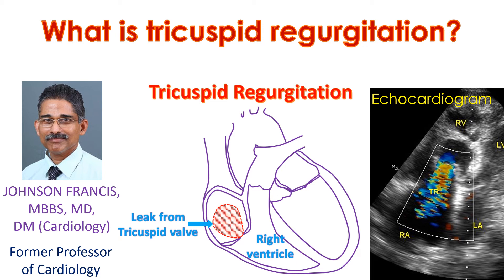Tricuspid regurgitation is a leak in the valve between the right ventricle and right atrium. The right atrium is the upper chamber from which the right ventricle, the lower chamber, receives blood when it relaxes after a contraction. The tricuspid valve normally prevents backflow of blood into the right atrium when the right ventricle contracts and pumps blood to the lungs for oxygenation.